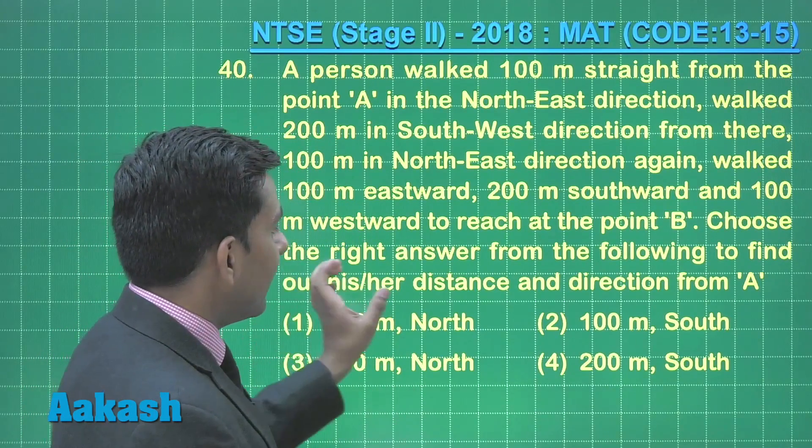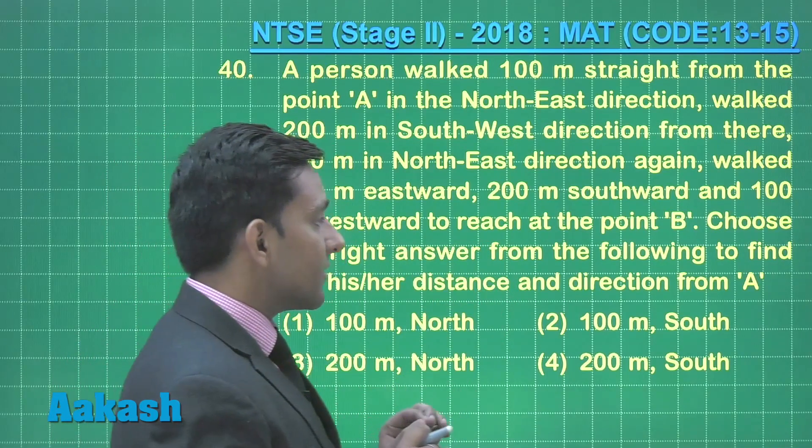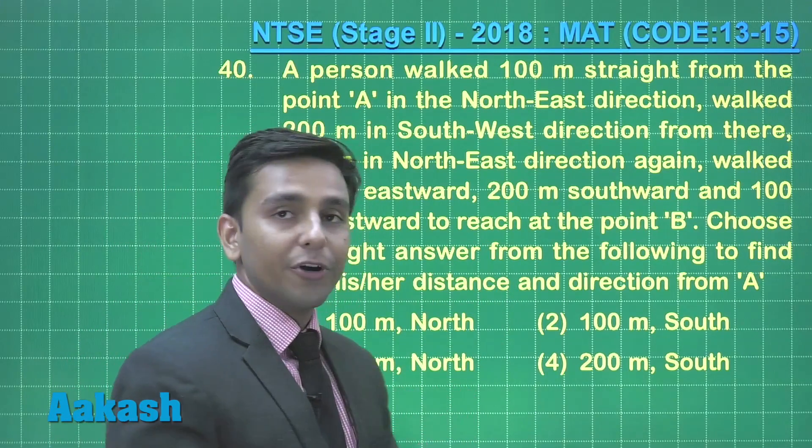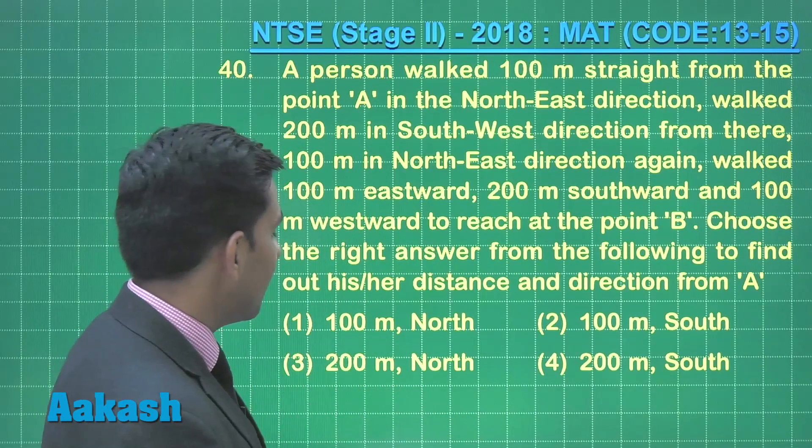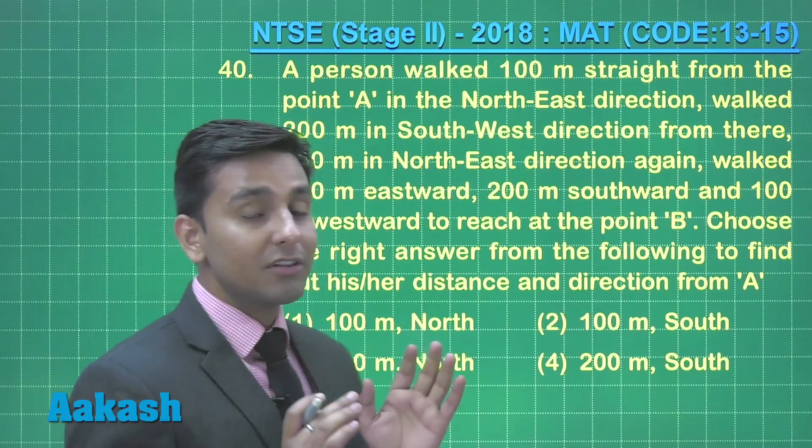Choose the right answer from the following to find the distance and direction from point A. So here we can see that we have the options: 100 meter, 100 meter, 200 meter, but we have with different directions.